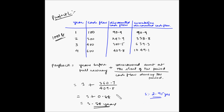For Project S the discounted payback period is 2.95 years, whereas for Project L it is 3.88 years. Based on the discounted payback period method, Project S will be given a higher ranking as it recovers the investment outlay sooner.